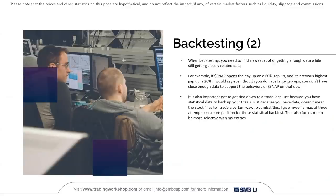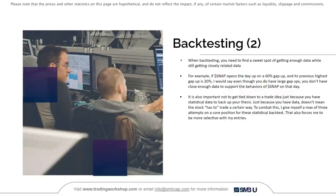When backtesting, you need to find a sweet spot of getting enough data while still getting closely related data. For example, if Snap opens the day up on a 60% gap up and its previous highest gap up is 20%, even though you have large gap ups, you don't have close enough data to support the behaviors of Snap on that day. If you decide to take the trade, you have to recognize that and potentially size down. It is also important not to get tied down to a trade idea just because you have statistical data to back up your thesis.